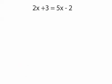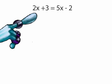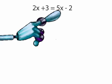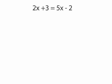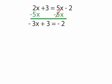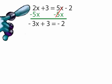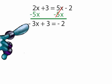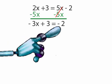Our last equation is 2x plus 3 equals 5x minus 2. For this equation, we have an x variable on both sides. We want to isolate the x variable on one side, so we subtract 5x from both sides. The two 5xs cancel out. 2x minus 5x equals negative 3x. Our remaining equation now reads, negative 3x plus 3 equals negative 2.